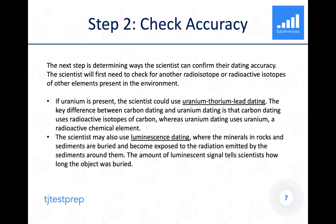Our second step, which is the second part of the problem, was to describe some ways that scientists could check their accuracy — to make sure that the 22,920-year figure they came up with is generally correct. The scientists will first need to check for another radioisotope or radioactive isotopes of other elements present in the environment to see if they can use some other dating strategies. So if there was uranium present in the environment, the scientists could use uranium-thorium-lead dating.